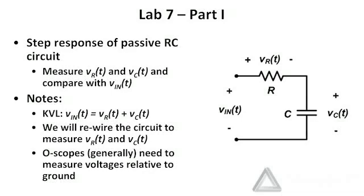What I want you to notice from this part of the lab assignment is that V sub R of T plus V sub C of T has to be equal to the input voltage applied to the overall circuit — we can't lose any energy magically. So we'll take a look at those two waveforms and notice that V sub C of T plus V sub R of T sum up to be equal to V in of T.